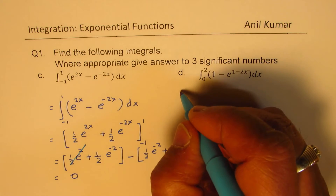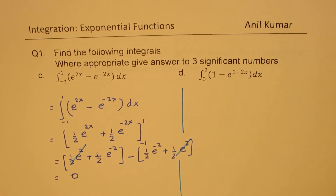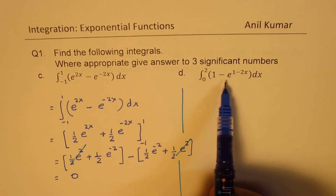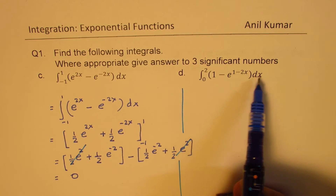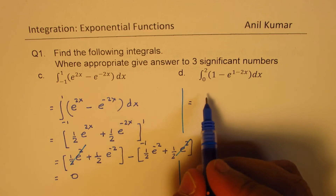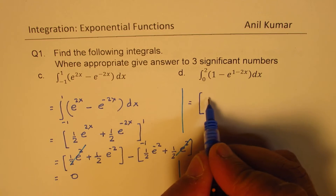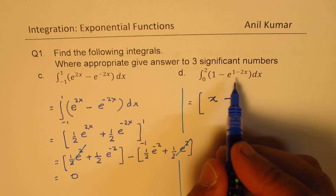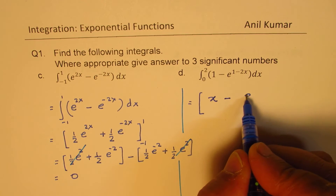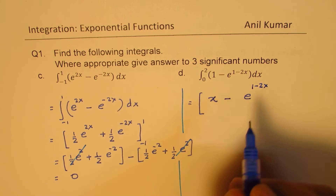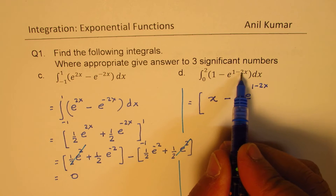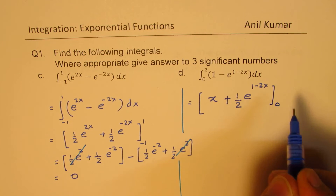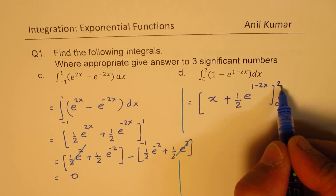The next one is from 0 to 2: integrate 1 minus e to the power of 1 minus 2x dx. When you integrate, 1 gives x, and the integral of e to the power of 1 minus 2x is e to the power of 1 minus 2x divided by minus 2, making the overall sign positive. We evaluate this from the lower bound 0 to the upper limit 2.